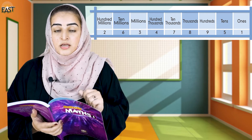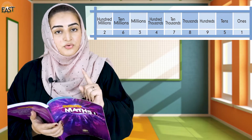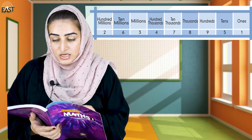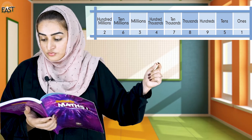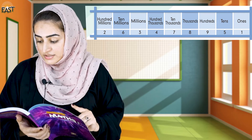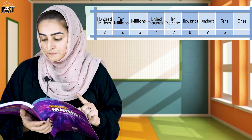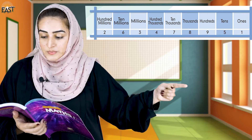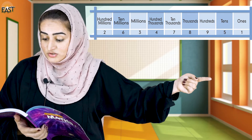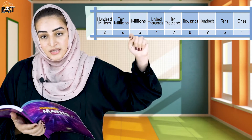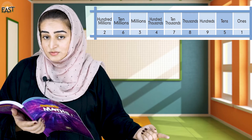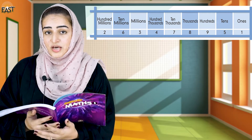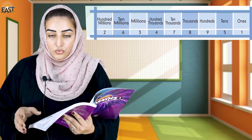You have to be very careful about this. We put the digits from the left side: 1 is at ones, 5 is at tens, 9 is at hundreds, 8 is at thousands, 7 is at ten thousands, 4 is at hundred thousands, 3 is at millions, 6 is at ten millions, and 2 is at hundred millions.